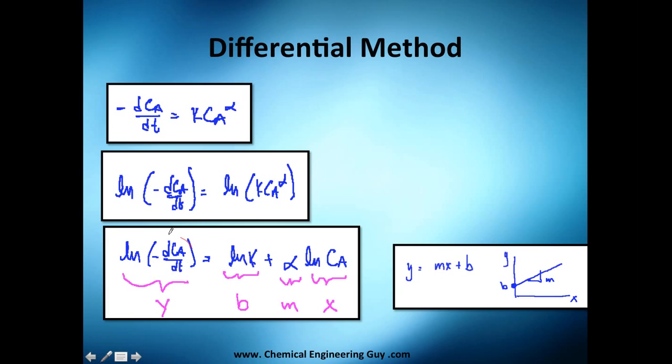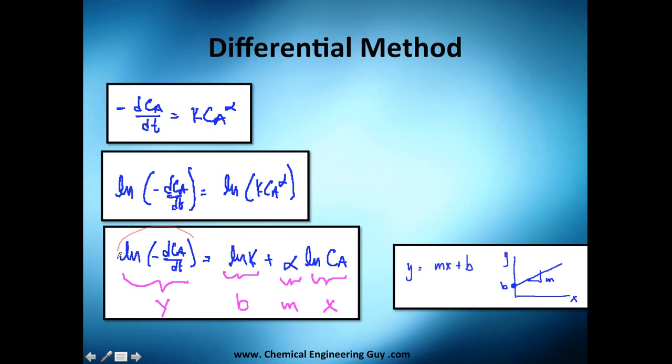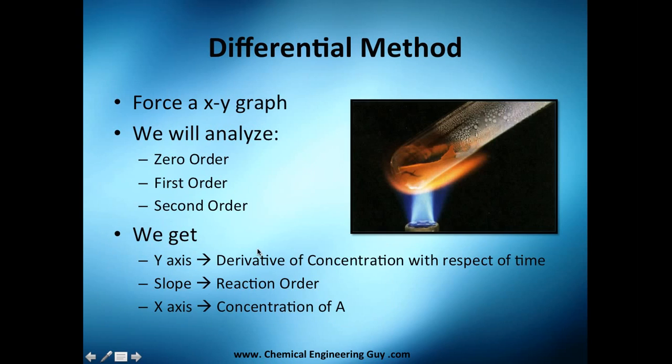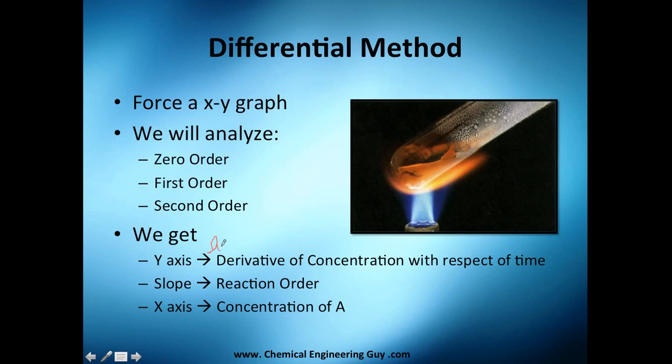We are going to use our y-axis, as I told you, derivative of concentration with respect to time, which is essentially what we told you here. The b will be the concentration, or well, b is the intercept. When x equals zero, what value does y take? It will be natural logarithm of k. Our slope is going to be the order, and our x value is the natural logarithm of the concentration. Just be sure that these are the natural logarithms.